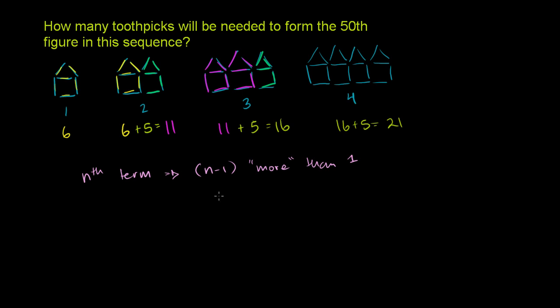So you could say that for the nth term, the number of toothpicks is equal to the number you're more than 1. So n minus 1 times 5, that's how much you're going to add above and beyond the amount of toothpicks in just the first sequence, plus the number of toothpicks that you would just have in the first sequence, or just this one house, plus 6. So that's one way to think about it. And if this looks complicated, you just say, well look, if I put a 4 here, I'm 3 more than 1. So 4 minus 1 is 3, so that'll be 3 times 5, which is 15. And then you add the number of toothpicks in 1, and you get 6.